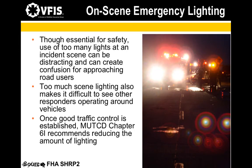The Manual on Uniform Traffic Control Devices, Section 6I.05, specifically covers the use of emergency vehicle lighting, stating that the use of high-intensity rotating, flashing, oscillating, or strobe lights is essential, especially in the initial stages of a traffic incident, for the safety of emergency responders and road users approaching the scene. However, emergency vehicle lighting provides warning only and provides no effective traffic control.